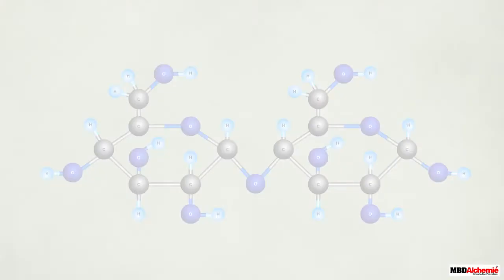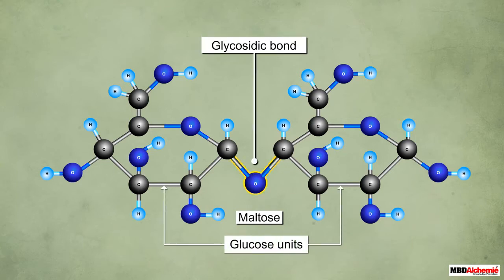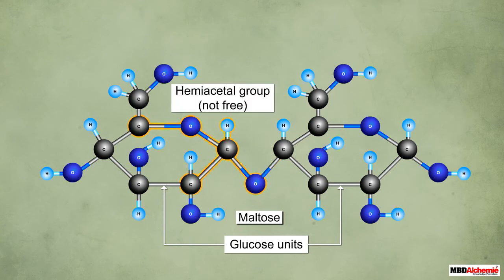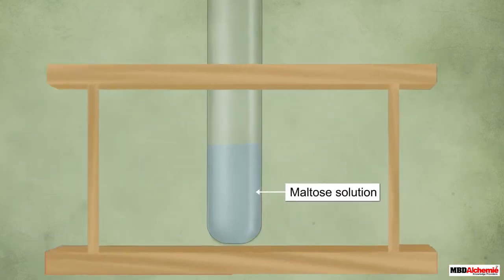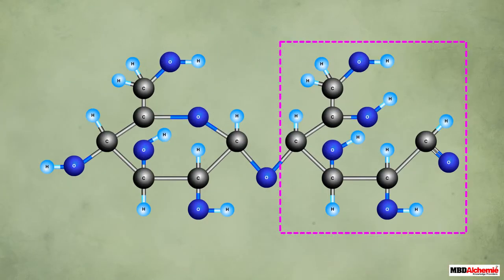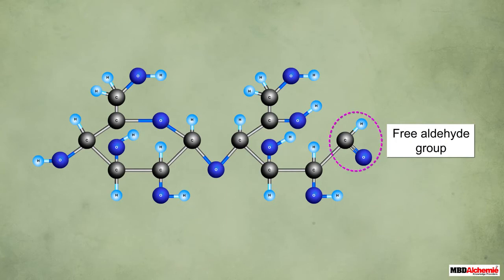Another example is maltose, which is a disaccharide. Maltose has two glucose units joined together by a glycosidic bond. The hemiacetal group of one of these glucose units takes part in the glycosidic bond formation, whereas the hemiacetal group of the other glucose unit remains free. In the solution of maltose, the ring of the glucose unit with a free hemiacetal group opens up and the free hemiacetal group changes to a free aldehyde group.